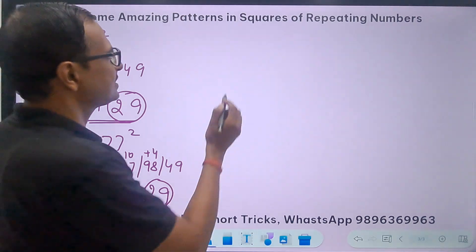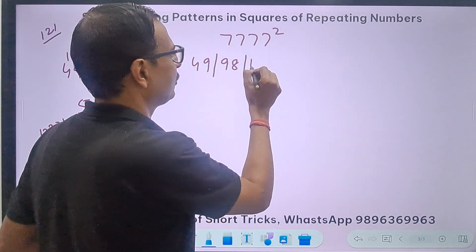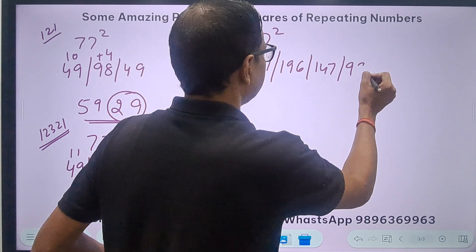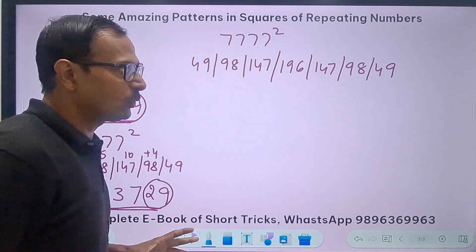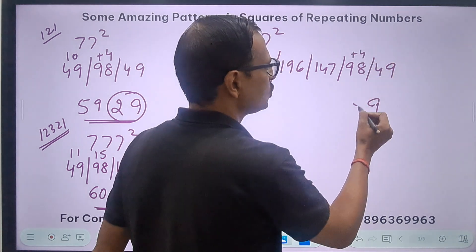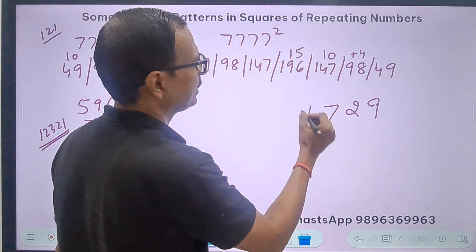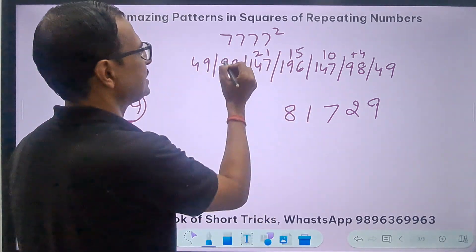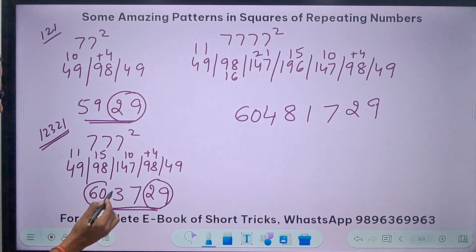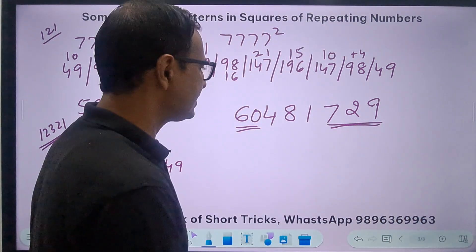For 7777 squared, I use 1-2-3-4-3-2-1: multiples of 49 are 49, 98, 147, 196, then back 147, 98, 49. Carrying through carefully: we get 196; then 21; 168 → 16; then 114 → 11; then 60. So 7777² = 60481729. Comparing: 77² ends in 729, 777² ends in 729 as well; 7777² ends in 1729. And both begin with 59 and 60 respectively — something special is going on in between those digits.